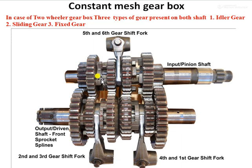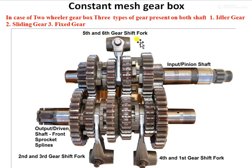The gear selector mechanism uses forks. These forks are connected to the gear selecting mechanism and can push the sliding gears — acting as dog clutches — to engage with the shaft. The forks have pointed pins. These pins follow a path to produce linear movement in different directions to select a gear.